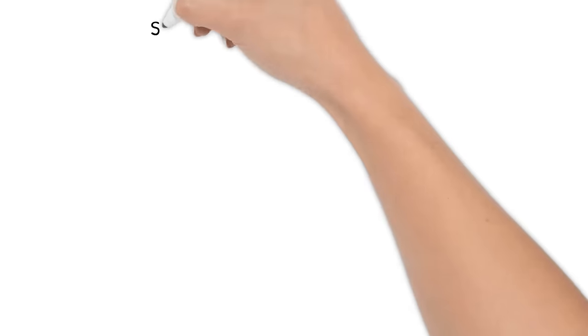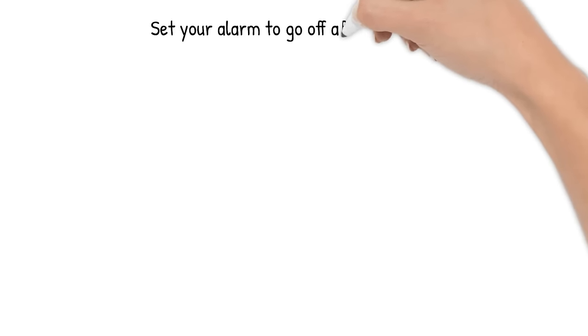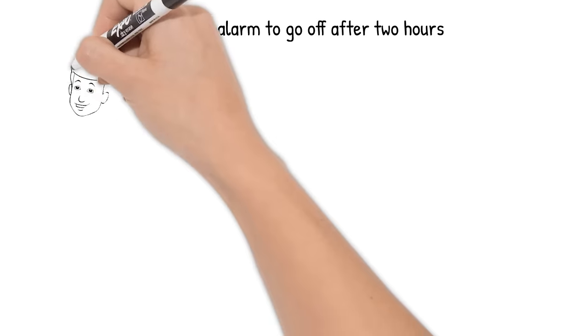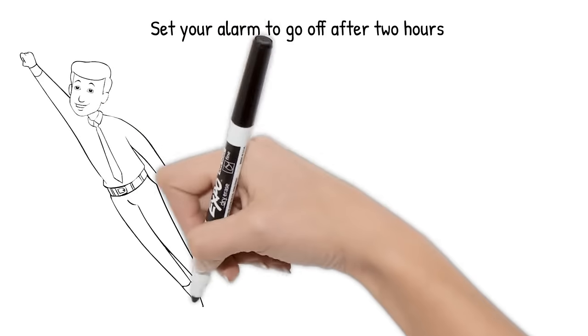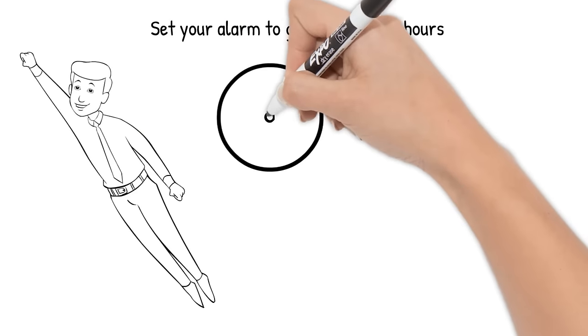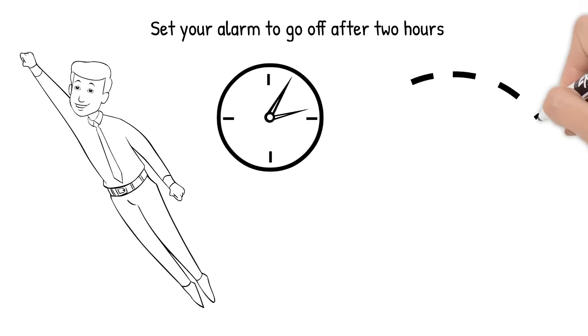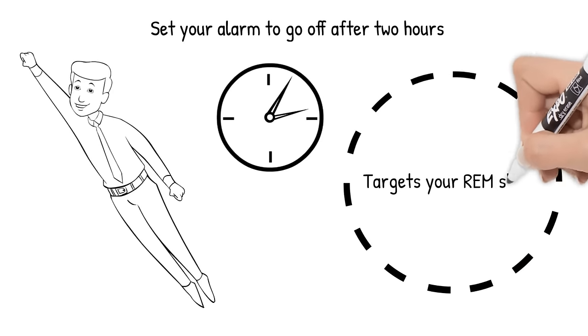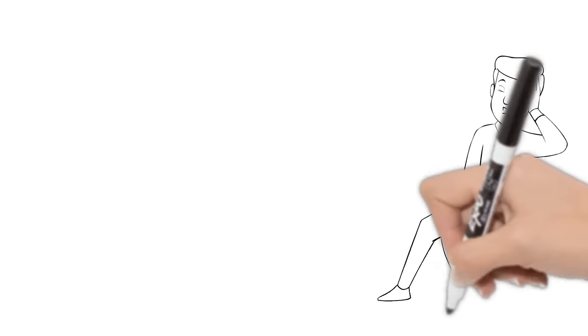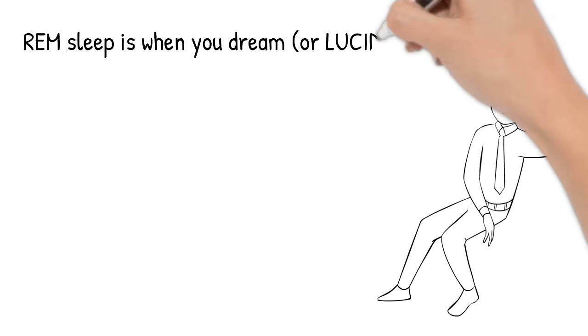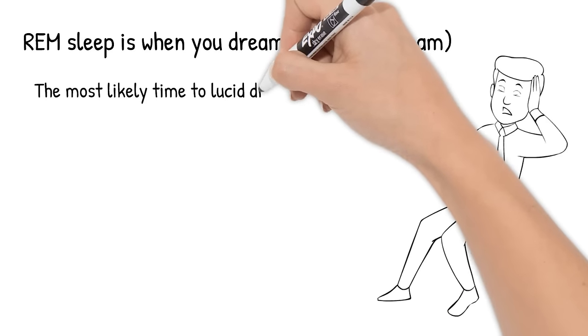So set your alarm to go off about two or three hours after you've gone to sleep. So let's say if you go to bed at 9 PM, you would set your alarm to go off at midnight. If you go to bed at midnight, your alarm would go off at 3 AM. Now it's going to be targeting your REM sleep, which stands for rapid eye movement sleep. I'm sure you've heard this before, but this is when you lucid dream and this is when it's more likely that you will be able to enter a lucid dream.